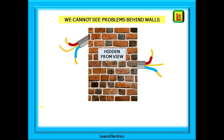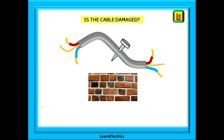Why do we test? Well sometimes we cannot see the whole route of the cables. They are hidden behind walls, under floorboards or in trunking systems. It is impossible for us to visually inspect every inch of every cable. We want to know if the cable is damaged. In this example a nail has penetrated the insulation and may be making contact with two of the conductors inside the sheath.